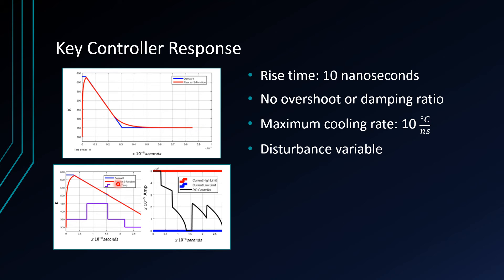The other limitation we had is our current capacity of 50 microamps. The key things we were looking at was making sure that the cooling and the heating had the proper rates regardless of the disturbance variable.